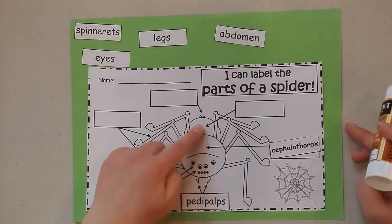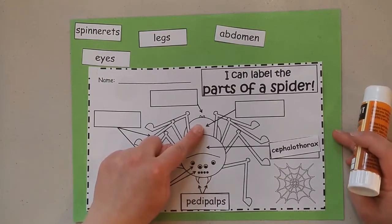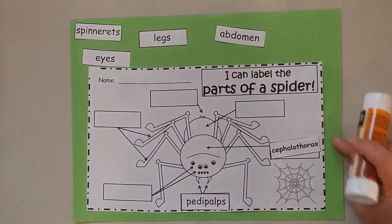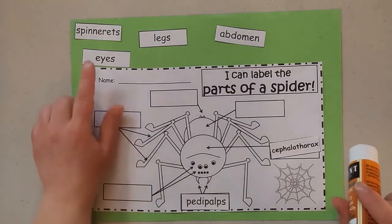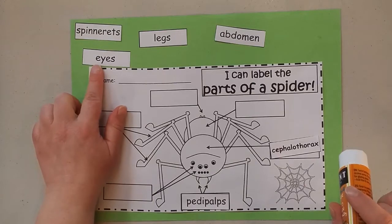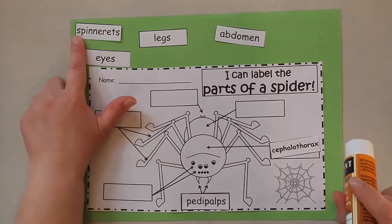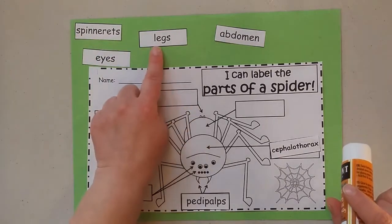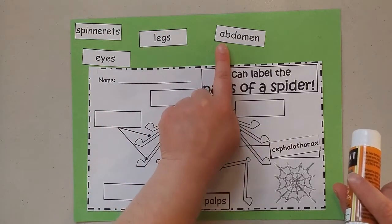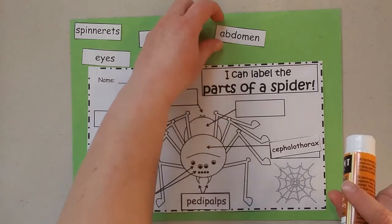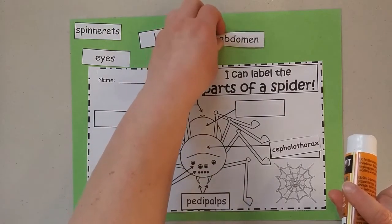Find this word that starts with a C and ends with an X. Cephalothorax. And now we're going to put down our glue and stick it down. Mine didn't stick straight but that's okay. Then behind the cephalothorax is the abdomen. Can you find the word that starts with the letter A? Does this one start with A? Nope. Does this one start with A? Nope. Does this one start with A? Nope. Does this one start with A? It does.